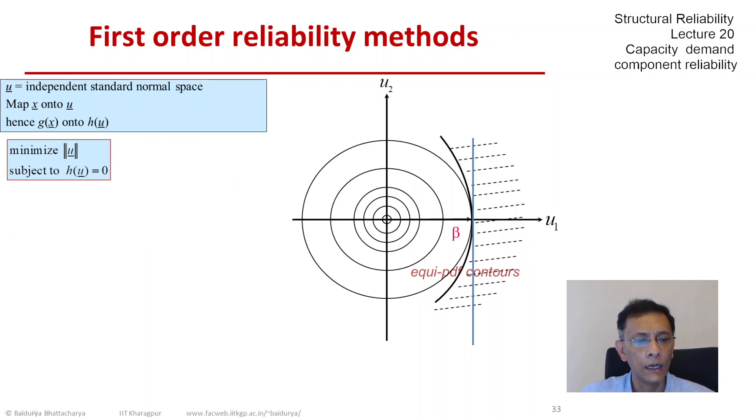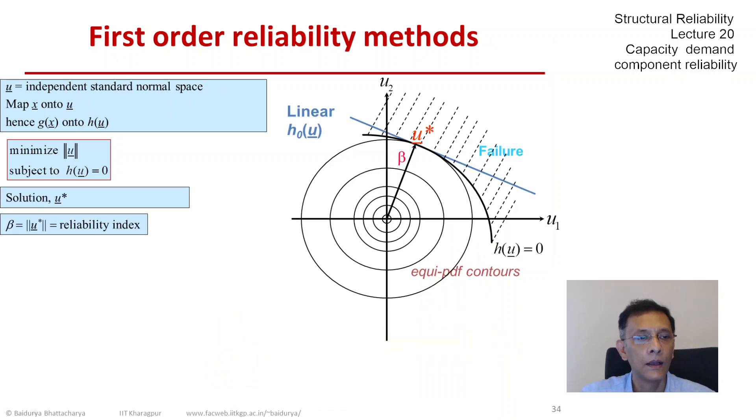To put everything together, our solution is u star, our reliability index is beta, and our failure probability is Phi of minus beta because we are looking at a region away from the origin greater than beta.